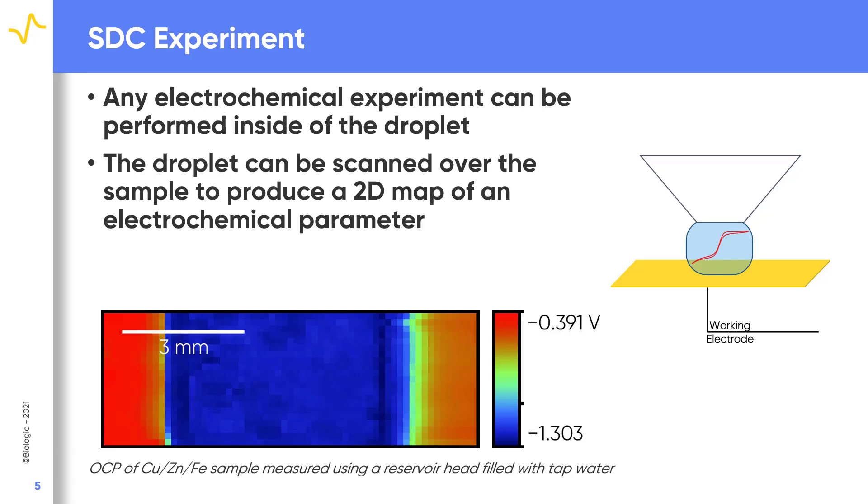While these point-by-point measurements can be performed, it is also possible to scan the droplet across the sample whilst applying a single bias or frequency. This forms a 2D map of a single electrochemical parameter of the sample. This is illustrated in the OCP measurement of the copper-zinc-iron tri-metallic sample shown.